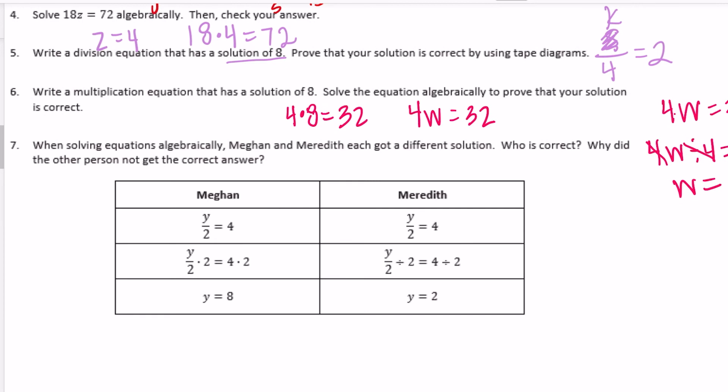Number 7, when solving questions algebraically, Megan and Meredith each got a different solution. Who is correct? Why did the other person not get the correct answer? So let's look through what they did. They both started with y divided by 2 equals 4. Then Megan did y divided by 2 times 2 equals 4 times 2. So she multiplied times 2. And Meredith did divided by 2. Now since we already used over here y divided by 2, to counteract that we need to multiply by 2 so that they cancel out. So Megan did the correct thing. Meredith should not have divided. So the correct answer should be 8. So Megan is correct.